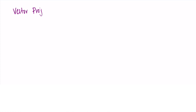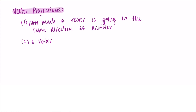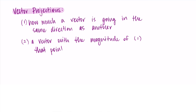Welcome back. In this video I'm going to talk about how we use vector projections — what they mean, the definitions, and then an example. There are two things we want to know when using projections. The main idea is that we have one vector and we're projecting it onto another. We want to figure out first how much of a given vector is going in the same direction as another vector, and then use that value as the magnitude for a vector pointing in that direction.